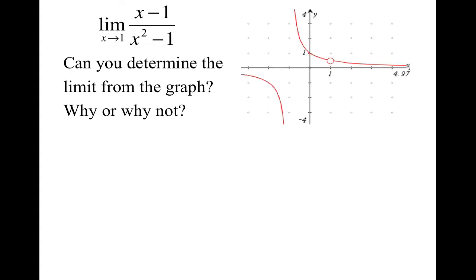Now, by graphing this function, your graph should look something similar to this. And as you can see, as we approach x equals one, at x equals one, it does not exist. However, from the left and the right, it appears that it is approaching the exact same value. However, this value is not very easy to identify exactly from the graph.